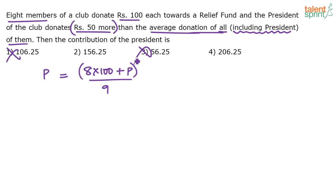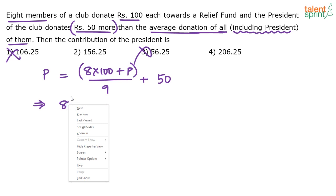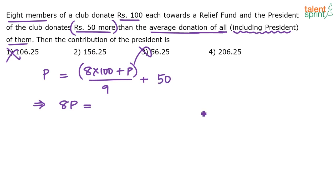The president donated 50 more than the average, so P equals (800 + P)/9 plus 50. Solving for P: multiply through by 9, giving 9P equals 800 + P + 450. So 9P minus P gives 8P equals 800 plus 450, which is 1250. Therefore P equals 1250 divided by 8, which is 156.25.